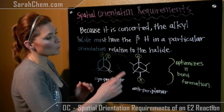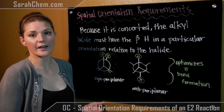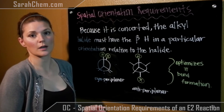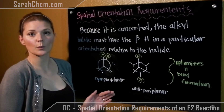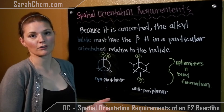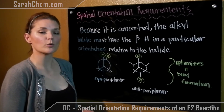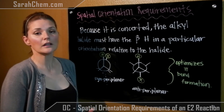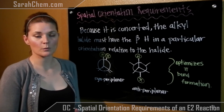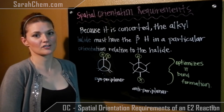The reason for that is when the pi bond forms, you have to have the p orbitals for each of those carbons parallel to one another to optimize the overlap. So just keep this in mind when you're dealing with an E2 reaction — it will affect things, especially when we're talking about cyclohexane reactions.